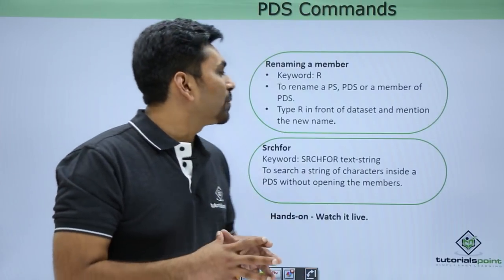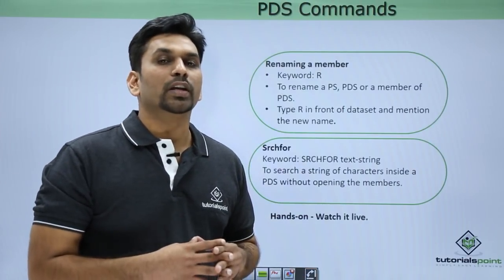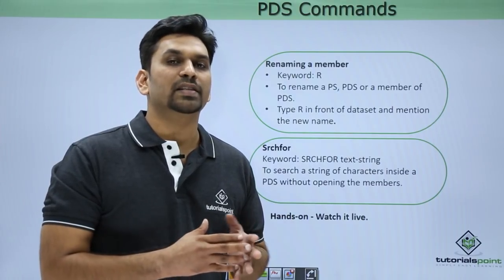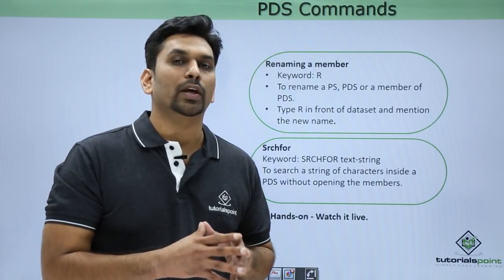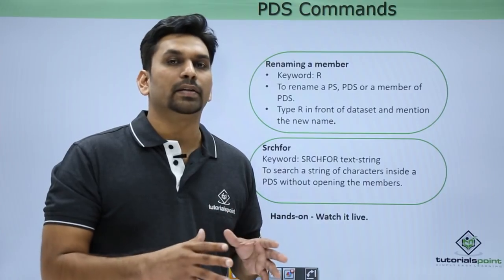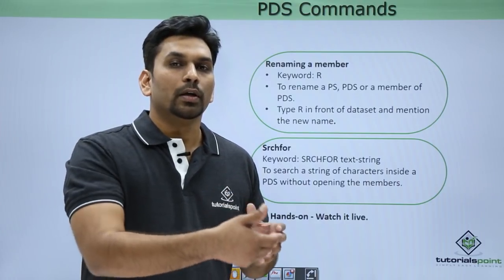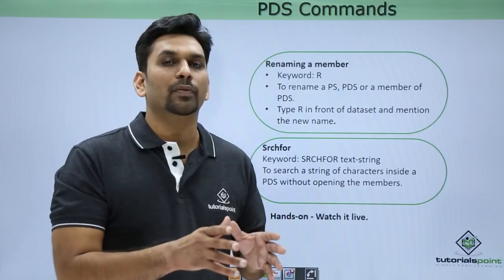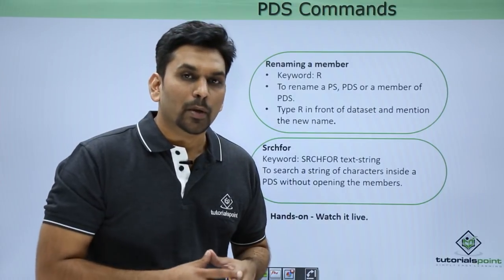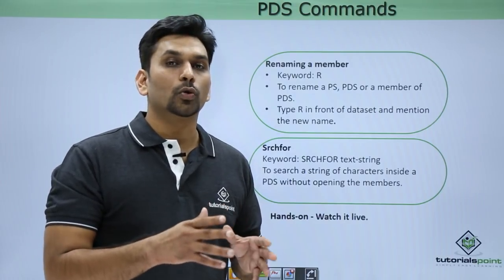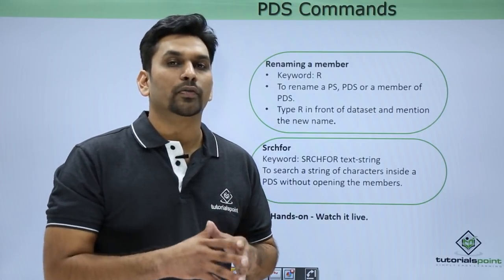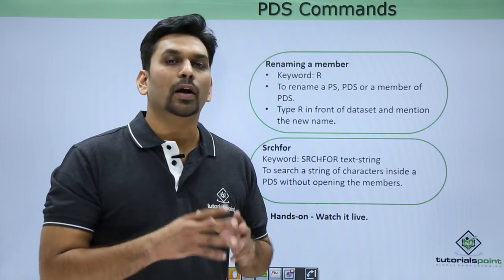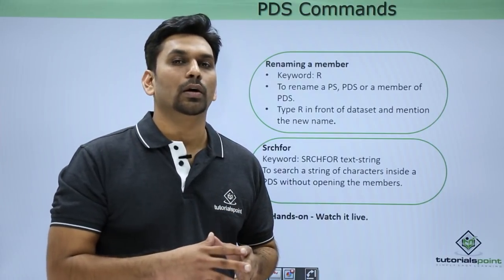Next is renaming a member. Suppose you want to rename a PS, a PDS, or a PDS member. Type R in front of it and hit enter. It will ask for a new member name — give the new member name and press enter, and it will be renamed. But after hitting enter, it will still show the old name. You need to do a refresh — type REF in the command line and hit enter — now it will show the new name.